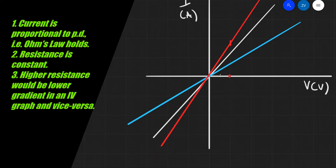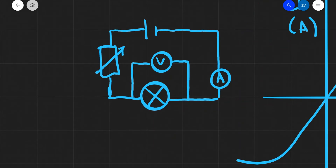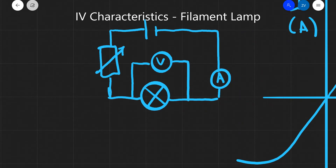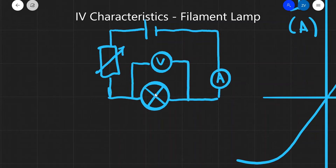Now let's have a look at the IV characteristics of a filament lamp. We repeat exactly the same experiment, however rather than a resistor we are going to have a filament light bulb in the circuit.